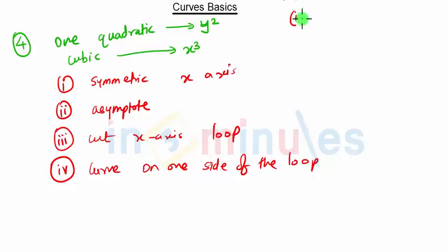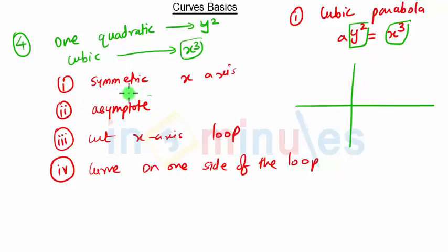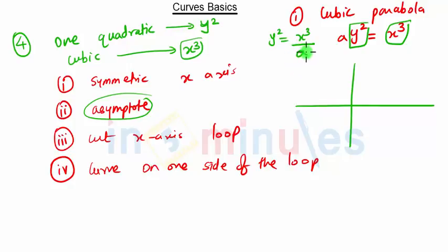The first example is the cubic parabola, which is nothing but y² = x³/a. This equation is quadratic in y and cubic in x. This curve will be symmetric about the x-axis. To find asymptotes, we put the denominator equal to zero — here we have 'a', so a = 0 does not make any sense. This curve does not have an asymptote.